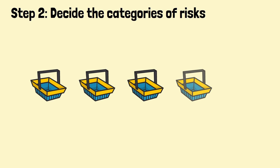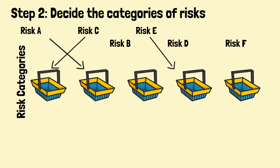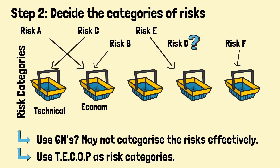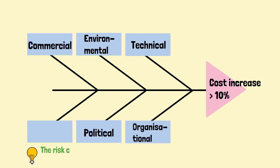Step 2: Decide the categories of risks. The participants will need to brainstorm the categories of risks. The categories should be able to contain most of the risks identified. We can use the default 6M categories, but they may not be effective for risk categorisation. The more appropriate categories could be based on the T-COP classes, which are made up of technical, economical or environmental, commercial, organisational, and political. Let's look at how our fishbone diagram looks like now. By the way, the team has the freedom to define their own risk categories.